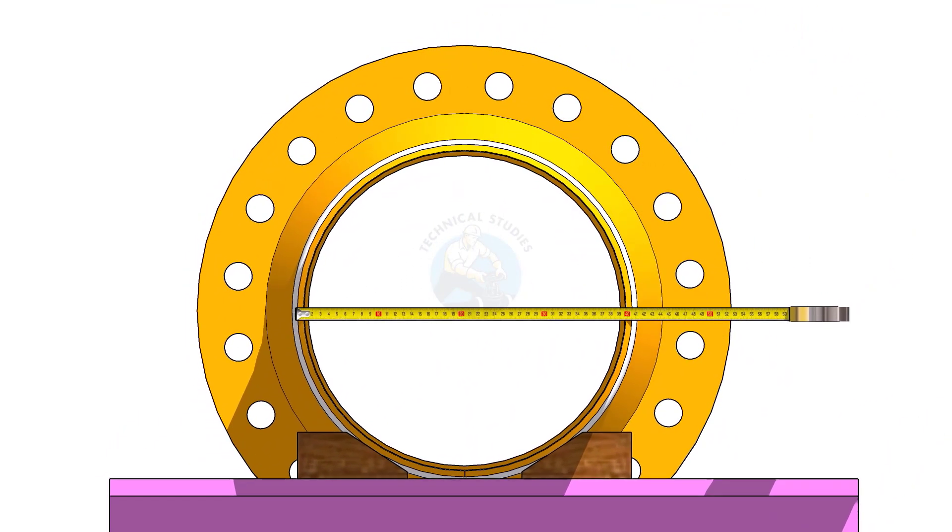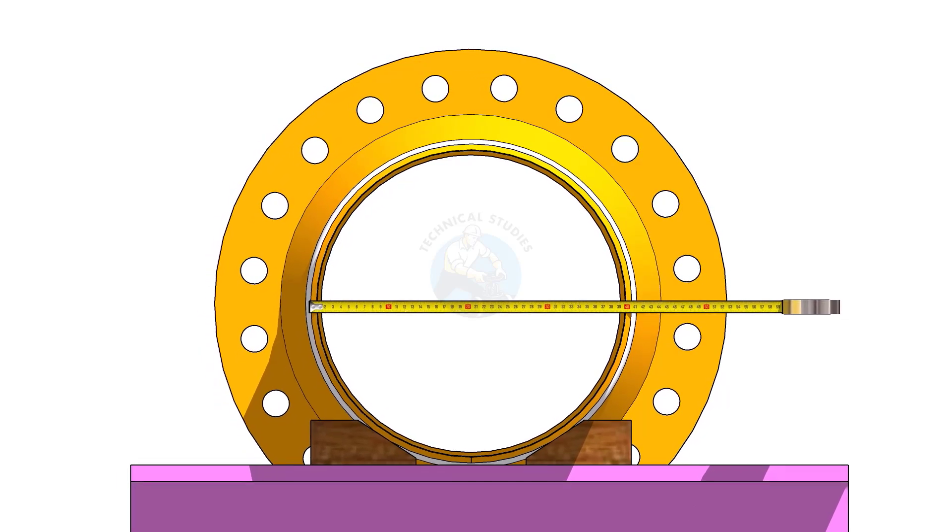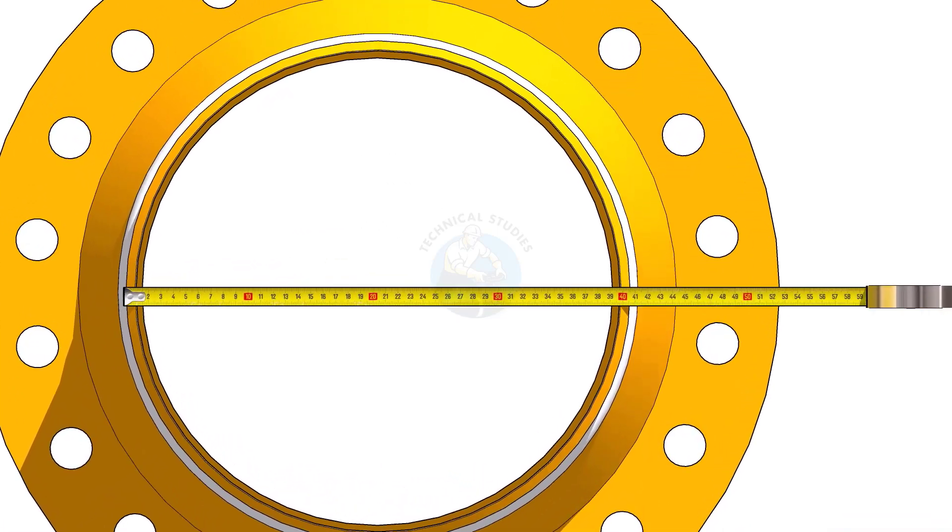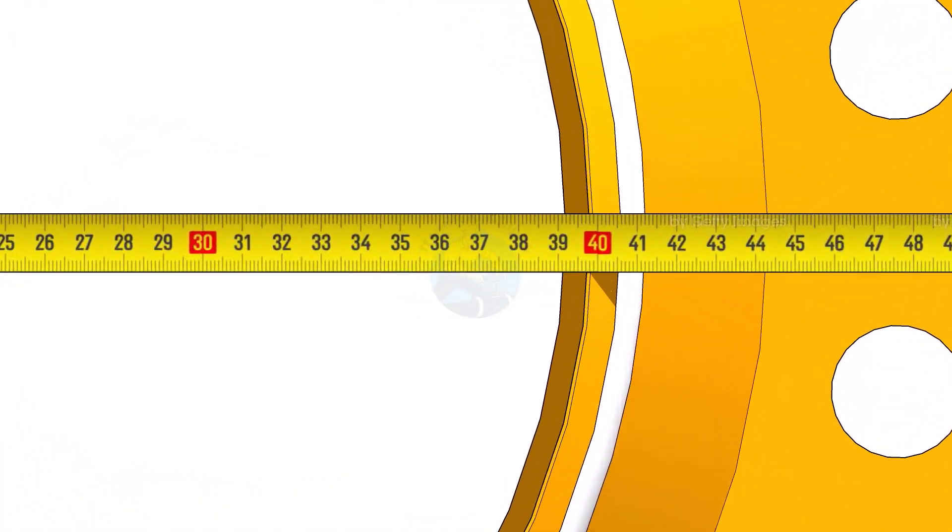Check the outer diameter of the pipe. Here, the diameter of the pipe is 406 millimeters.